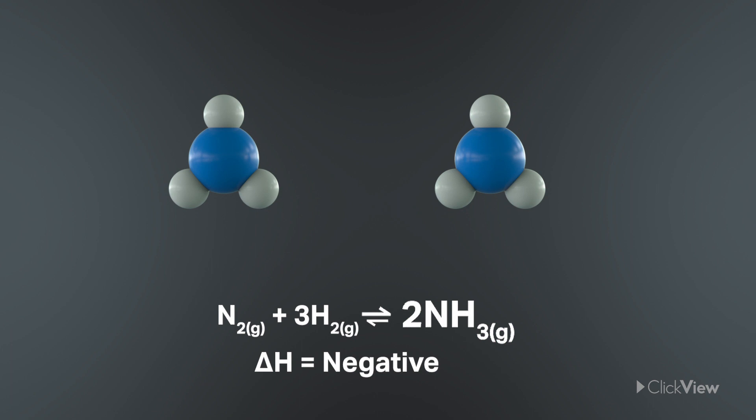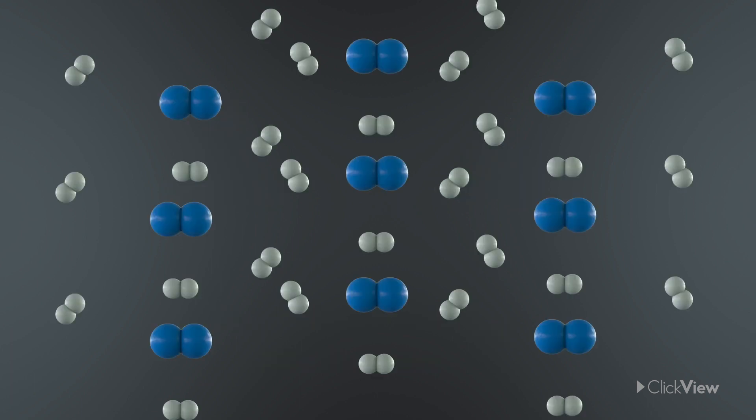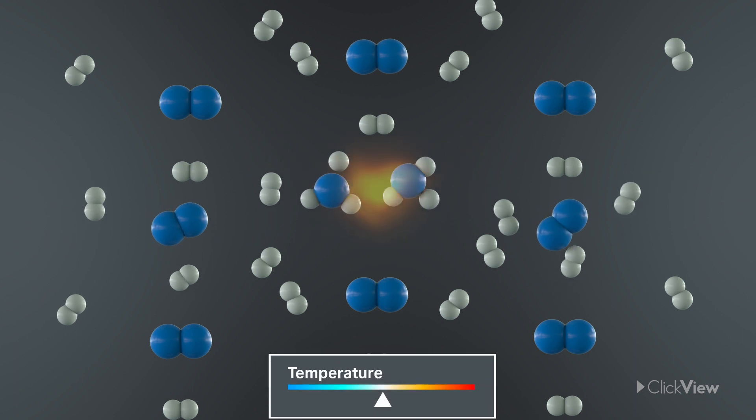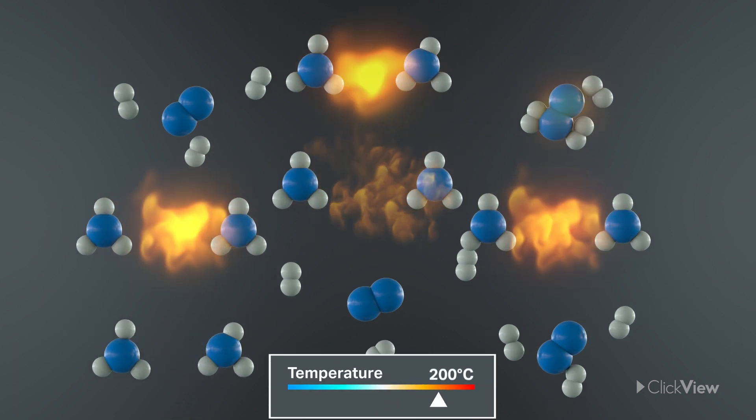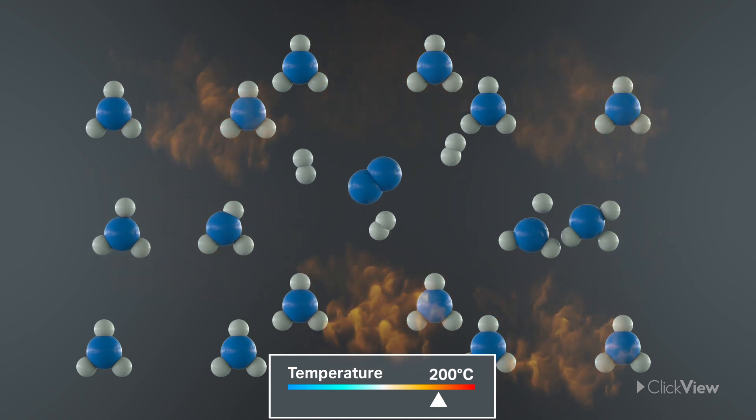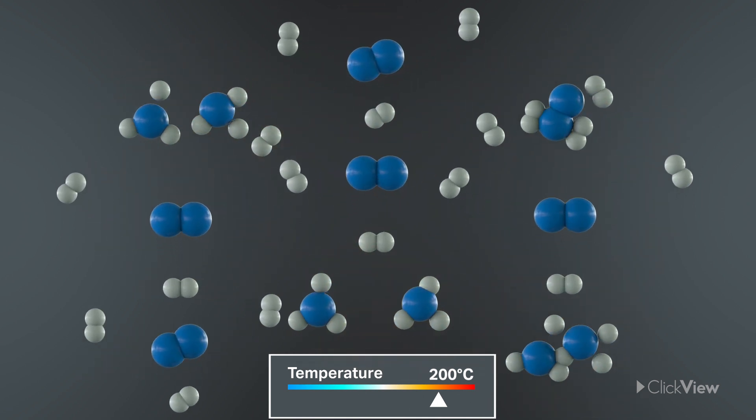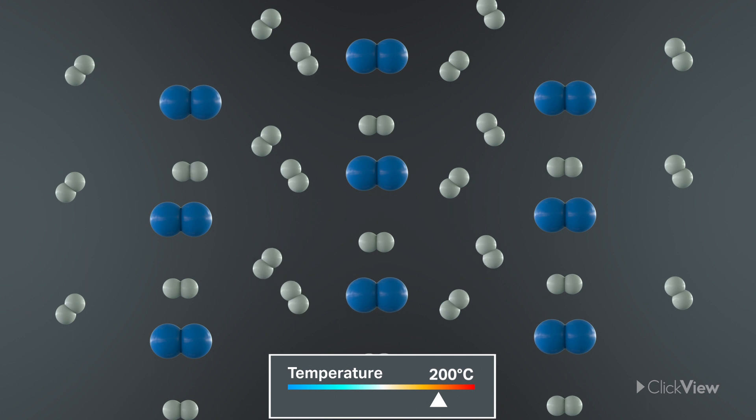This is a win-lose situation though. For one thing, Le Chatelier's principle comes with payback. Increase the forward reaction, you just give more heat to ammonia, providing it with the energy it needs to react and turn back into nitrogen and hydrogen.